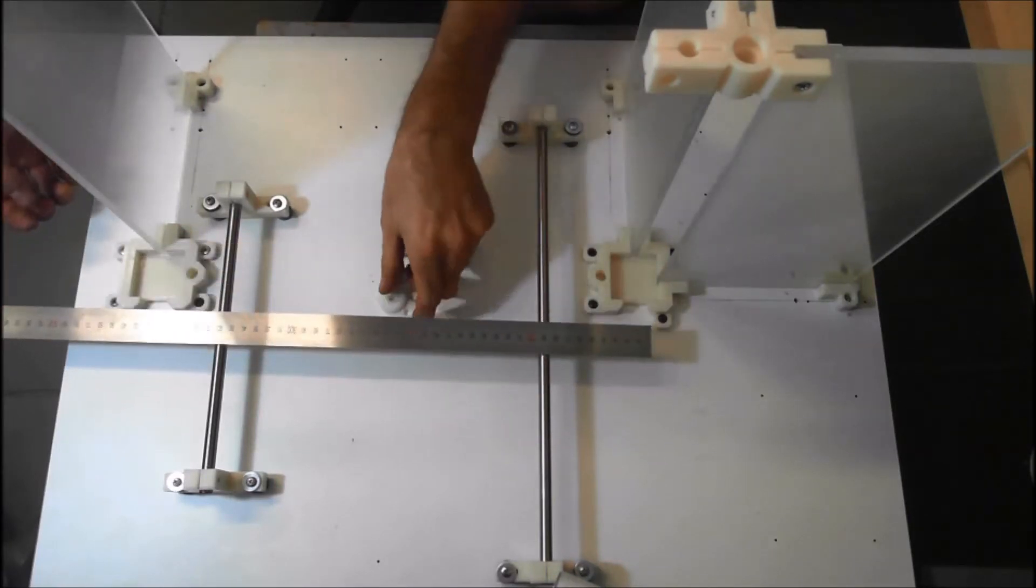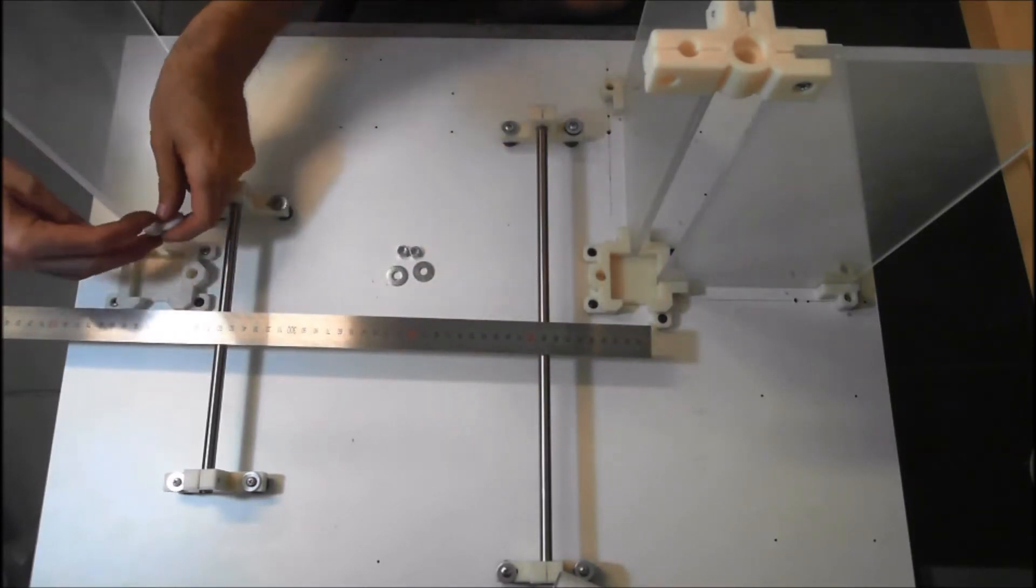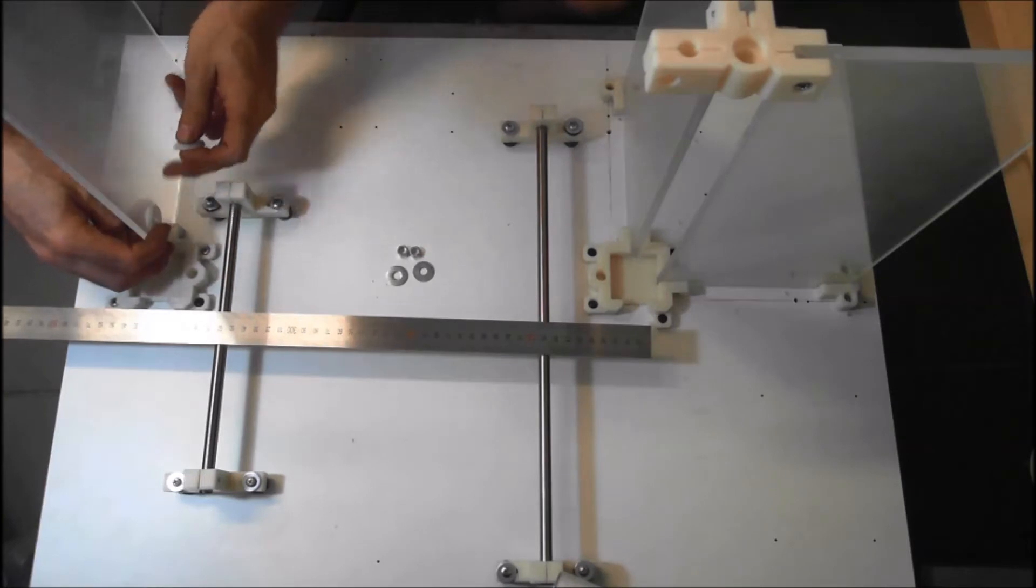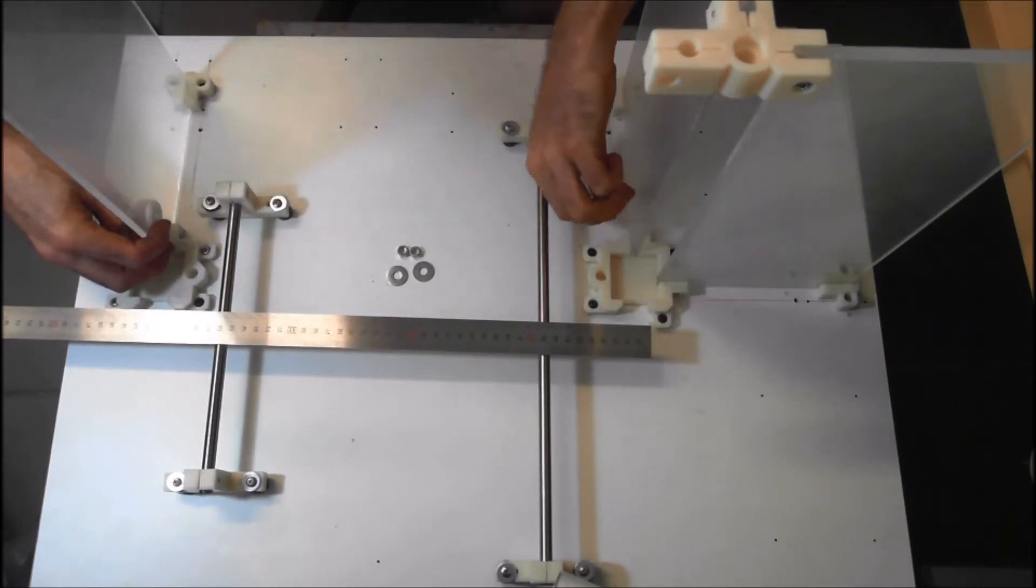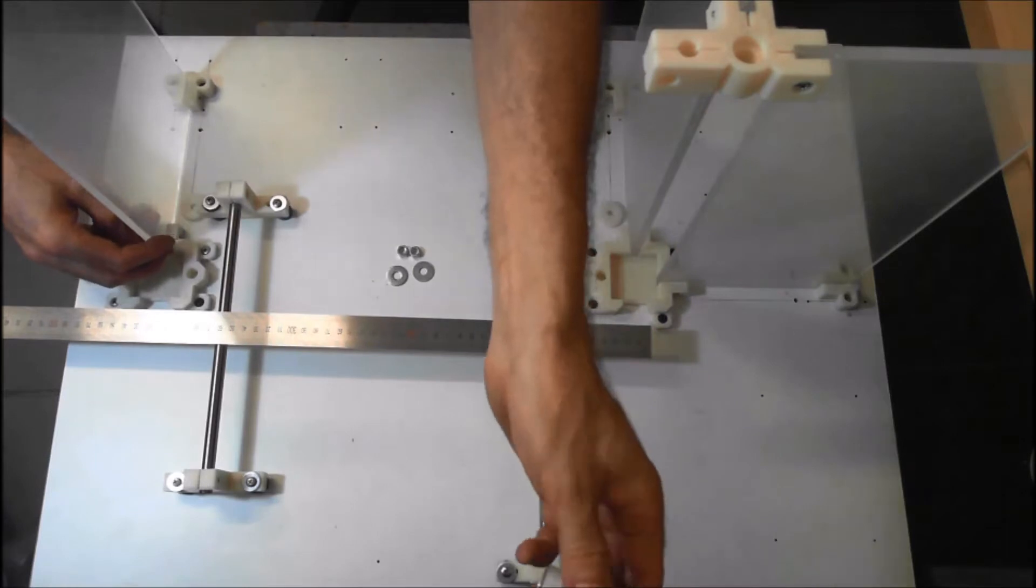Now we're going to minus 6 from that, because we need to minus the thickness of the plastic on either side. The thickness of these bushes is 3mm. So if we minus 6 from 418, we get 412, and that's what we're going to cut our element tube to.